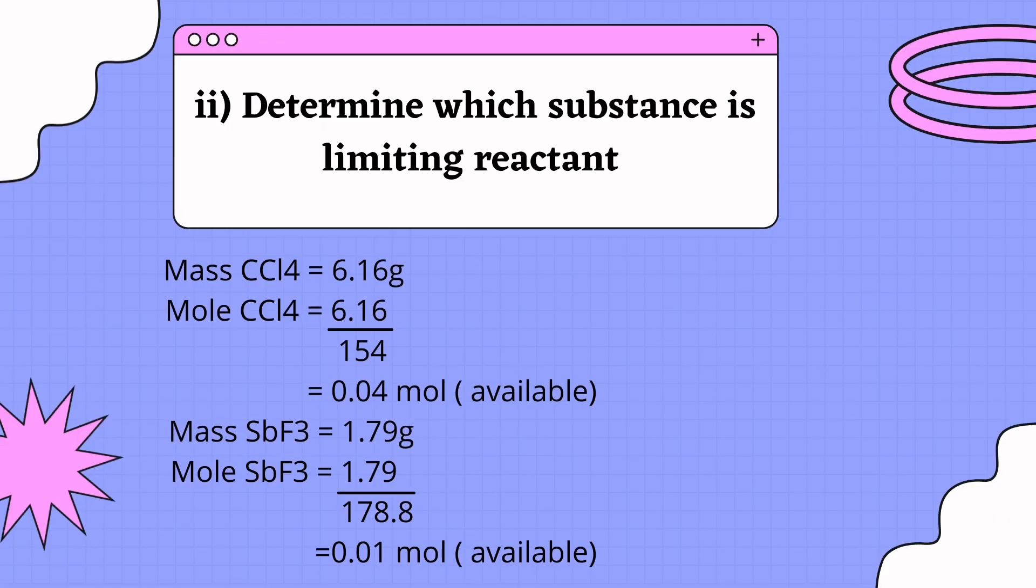For the second question, determine which substance is the limiting reactant. As we know, mass of CCl4 is 6.16 grams. In order to get moles of CCl4, 6.16 divided by 154, we got 0.04 moles. This is the available mole.